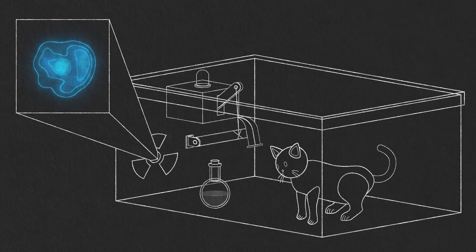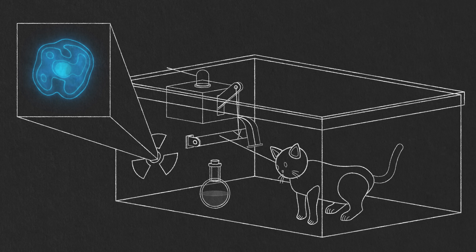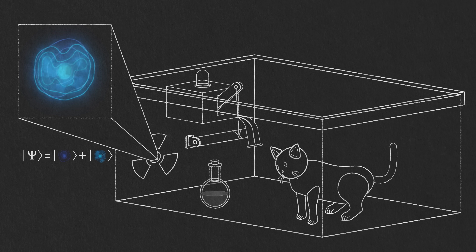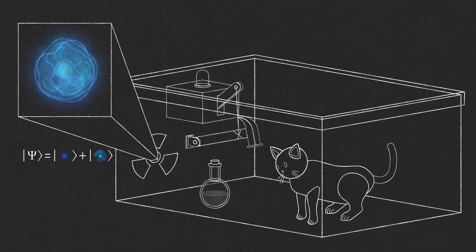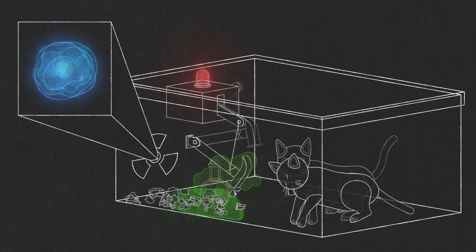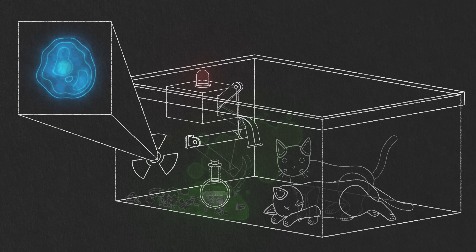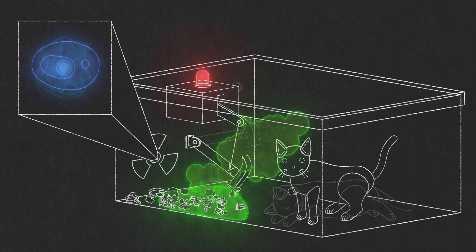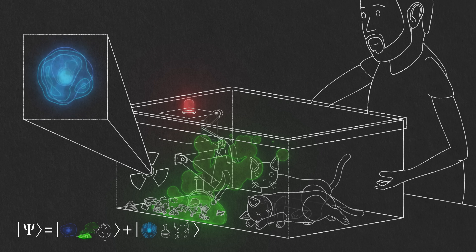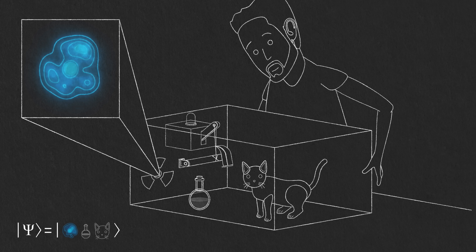Since the state of the cat and detector apparatus are directly tied to the state of the atom, we say they are entangled. According to quantum mechanics, the state of the atom does not have to be either decayed or not decayed — generally it's in a superposition of both at the same time, assuming no measurements have been made. This superposition state gets entangled with the detector and then the cat. So after some time, the wave function of everything inside the box is in a superposition of 'atom not decayed, poison not released, cat alive' and 'atom decayed, poison released, cat dead.' The cat really is both alive and dead at the same time. Only when we open the box and make a measurement does the wave function collapse, and the cat actually becomes either dead or alive.